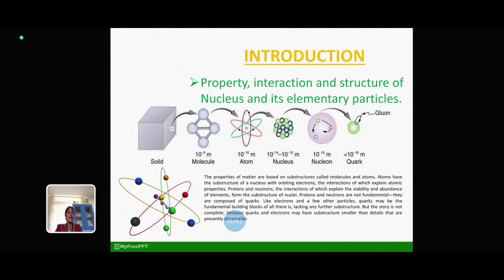Like the electrons and the few other particles, quarks may be the fundamental building blocks of the array, lacking any further substructures, but the story is not complete. Because, quarks and electrons may have substructures smaller than details that are presently observable.